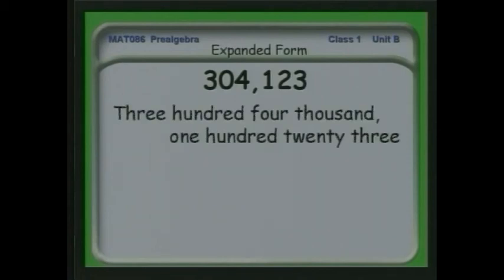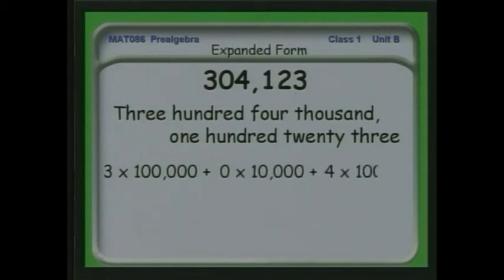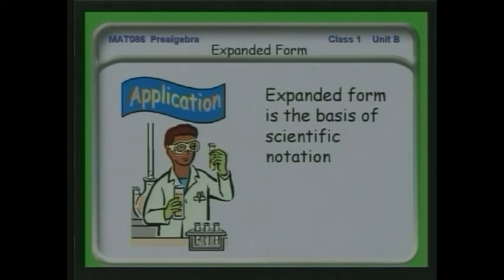Let's look at another example: 304,123. We have three hundred thousands, no ten thousands, four one thousands, one one hundred, two tens, and a three. This is 304,123 in expanded form. It turns out that if you're writing very large or very small numbers, there's a shorthand notation called exponents — writing things to powers — that this expanded notation lends itself to very well. We'll see this more in the units to come.